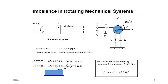One in the horizontal side and one in the vertical side. So this is the simple model. The forcing function in the rotating mechanical system is coming from the imbalance.